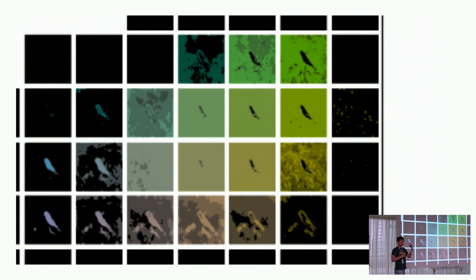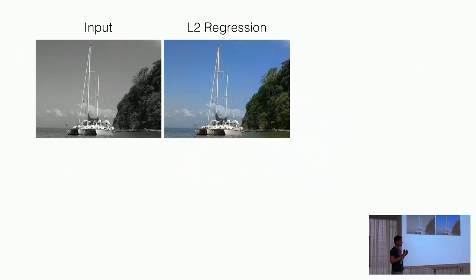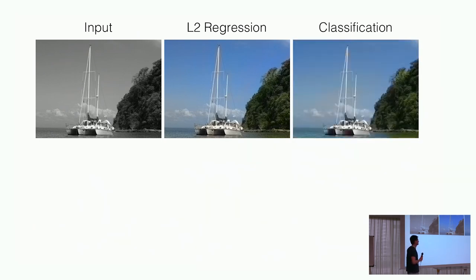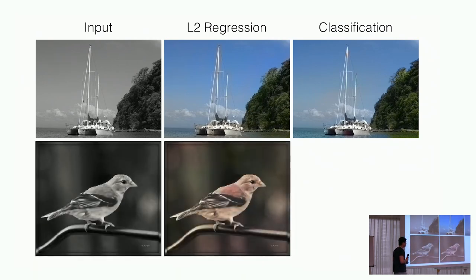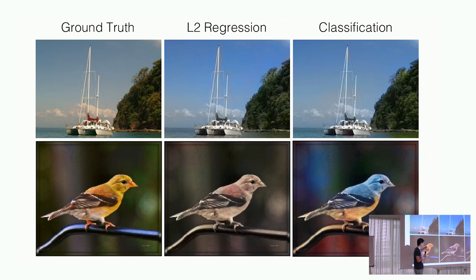There's one final step that takes us from this probability distribution into a final colorization. With L2 regression on a landscape image, the result looks okay because we're pretty certain of the colors of trees and sky. But for a bird, regression gives a boring sepia tone, while classification gives a nice yellow bluebird with a yellow belly. The ground truth bird is actually yellow — very far from the blue result — but we're perhaps just as happy with the bluebird because it's vibrant and more realistic looking.